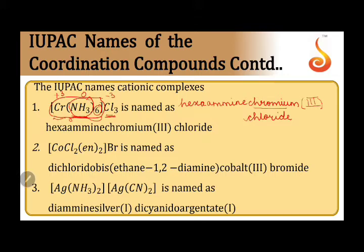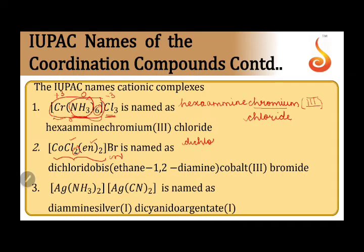In the next example, the part which comes first is the cationic part, and the second part is the anionic part. In the cationic coordination sphere there are two ligands. The ligands have to be named in alphabetical order, so chlorido comes before ethane-1,2-diamine.